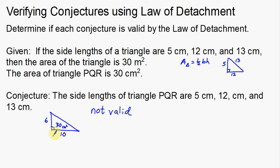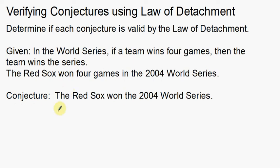That's an example of verifying whether a conjecture is actually valid. This one was not valid because I was able to come up with a different example. So that's one example of using the law of detachment. Here's another example — determine if each conjecture is valid by the law of detachment.